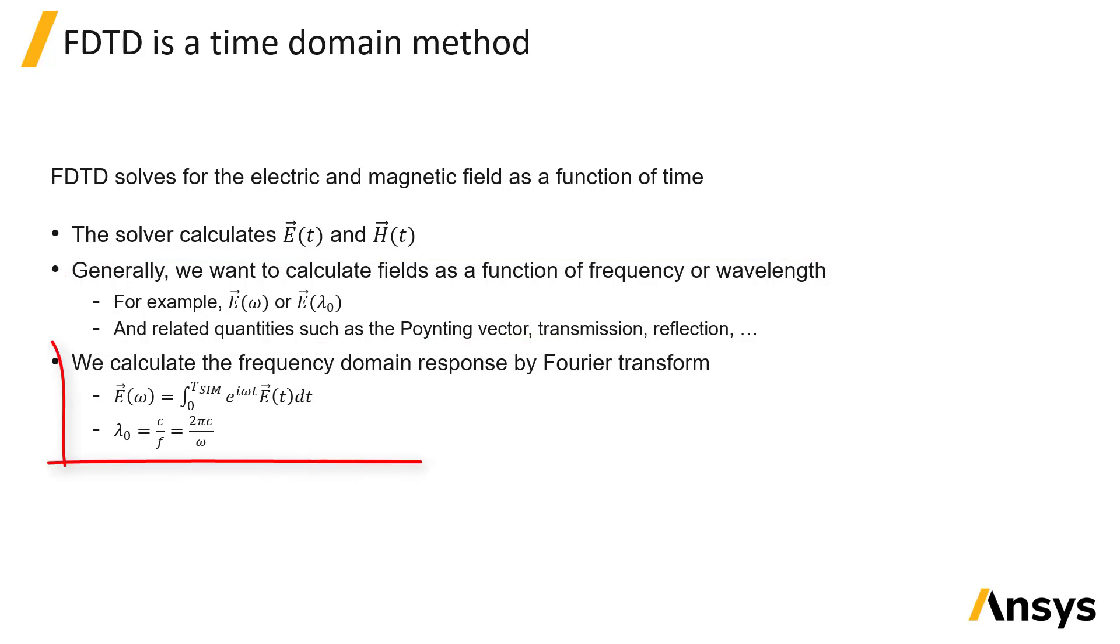We calculate the frequency domain fields by Fourier transforming the time domain fields. This Fourier transform can be calculated while the FDTD simulation is running at a predetermined set of discrete frequency values, or it can be done after the simulation, typically by FFT, as long as the fields have been recorded over the entire simulation time.